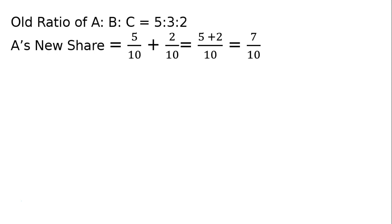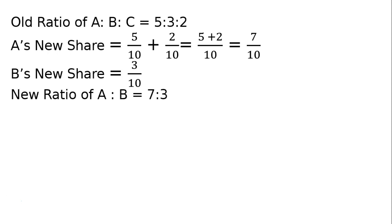Aur B ka ho gaya — B's new share: 3/10, old share jitna hai utna, aur woh kishe kuchh nilay liya. Dono ka denominator same hai. Therefore, new ratio of A:B is equal to 7:3.